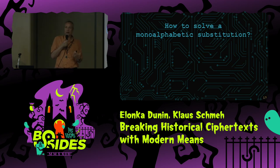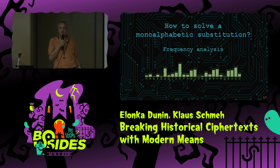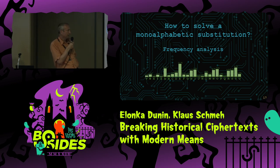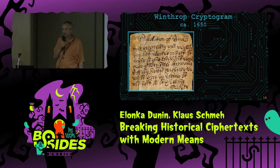How can we break such a simple monoalphabetic substitution cipher? Most of you certainly know how it works. The most obvious method is frequency analysis. If you know the language that was used, you know the letter frequencies. For example, in English, the E is the most frequent letter — almost 13 percent — followed by T, A, O, and so on. And this helps when we want to break a message.